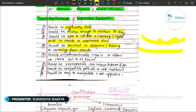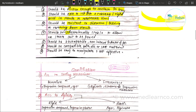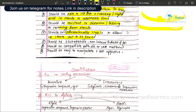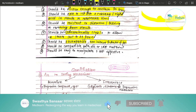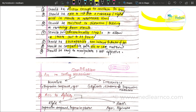It should not distort or tear. It should be dimensionally stable to allow one or more casts to be poured before the impression is discarded. It should be biocompatible and non-irritant to both doctor and patient. It should be compatible with die or cast materials such as Type 2 or Type 3 gypsum products.